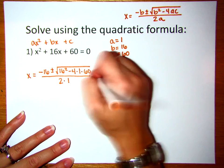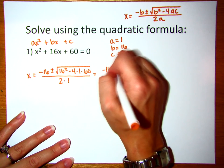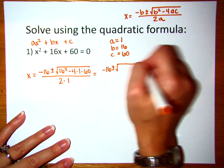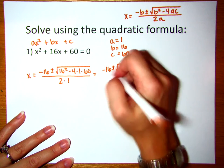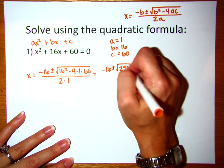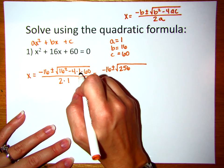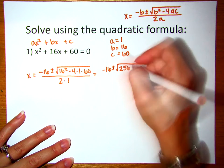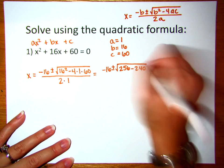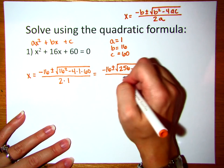So now we start to clean this up. We have negative 16 plus or minus the square root of — we're going to do 16 squared, which is 256. Then we're going to do negative 4 times 1, which is negative 4, times 60, which is negative 240. All of that over 2 times 1, which is 2.